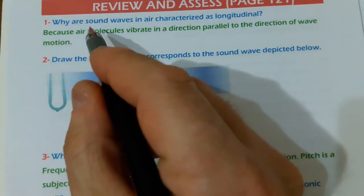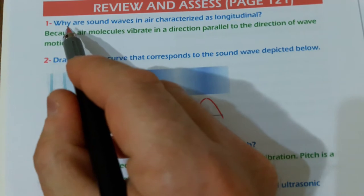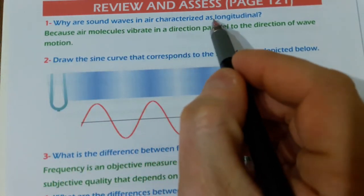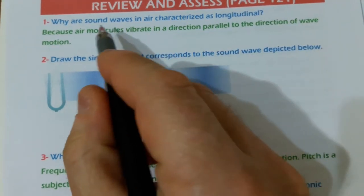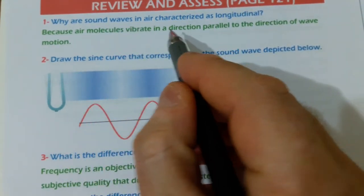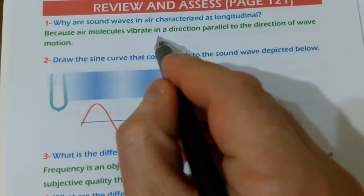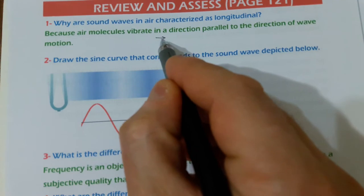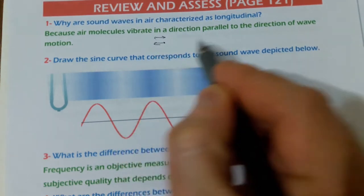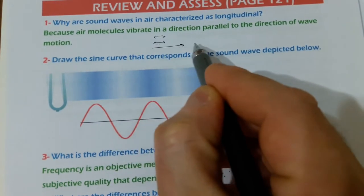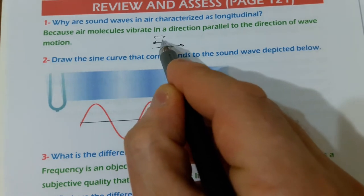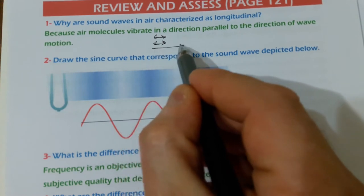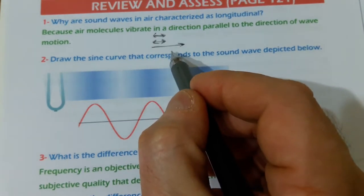Section review questions. Question number one: why are sound waves in air characterized as longitudinal? In sound waves, the particles are vibrating in the same direction as the motion of the wave. Particles are vibrating back and forth, and the wave is also traveling in the horizontal direction — the same direction of the vibration. That's why we say sound waves are longitudinal waves.